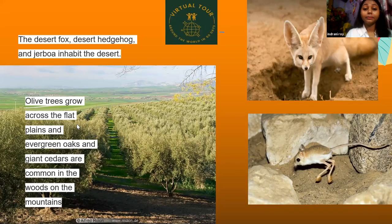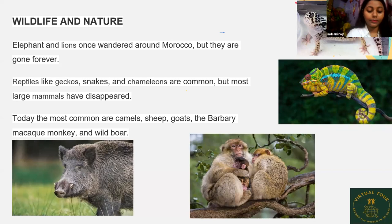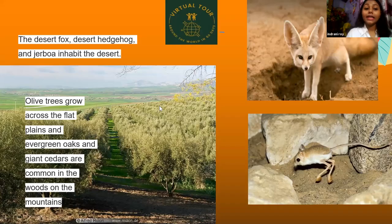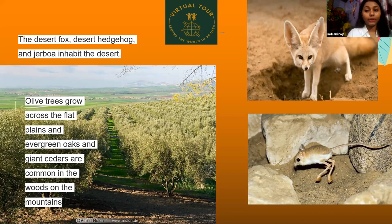Now, wildlife and nature in Morocco. Elephants and lions once wandered around Morocco, but they are gone forever. Reptiles like geckos, snakes, and chameleons are common, but most large mammals have disappeared. Today the most common animals are camels, sheep, goats, barbary monkey, and wild boar. The desert fox, desert hedgehog, and jerboa inhabit the desert. Olive trees grow across the flat plains, and evergreen oaks and giant cedars are common in the woods on the mountains.